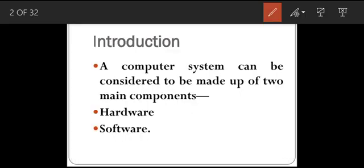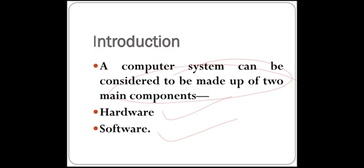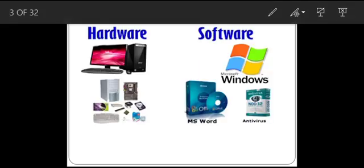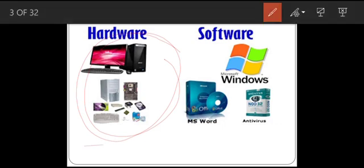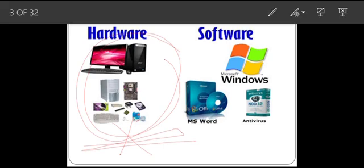A computer system is made up of two main components. One is hardware and another is software. All the physical devices such as keyboard, mouse, and monitor that we can touch and feel are hardware components. But these hardware components alone cannot do anything. These components have to be given instructions to perform any task, so for this, softwares are used.